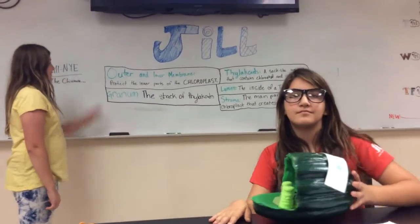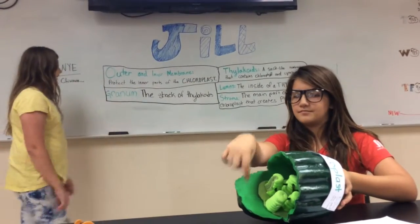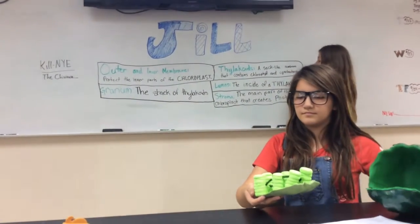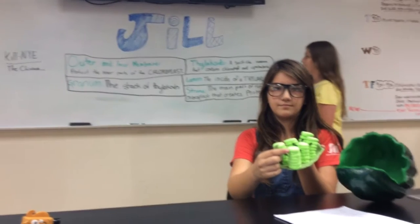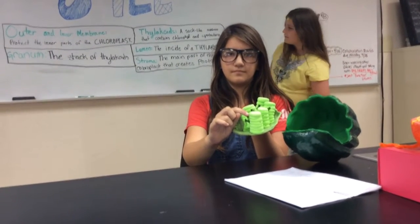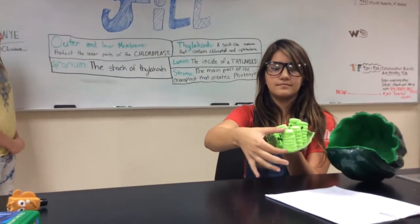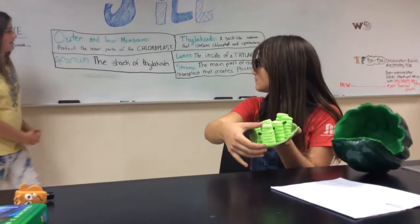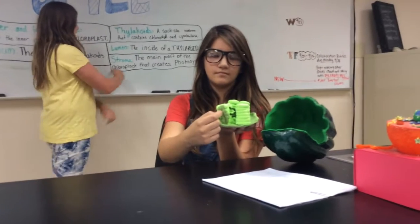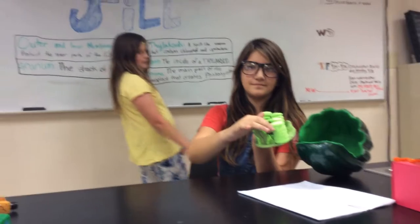Our first definition is outer and inner membrane — they protect the inner parts of the chloroplast. Thylakoids are a sac-like membrane that contains chlorophyll and cyanobacteria. The sac of thylakoids. Lumen, the inside of a thylakoid. Stroma, the main part of the chloroplast that creates photosynthesis.